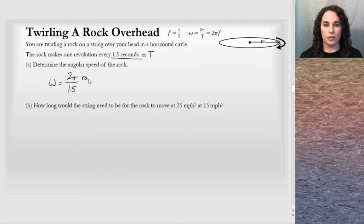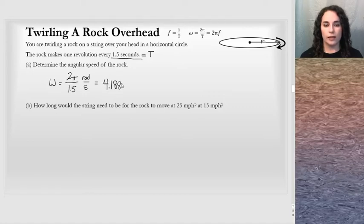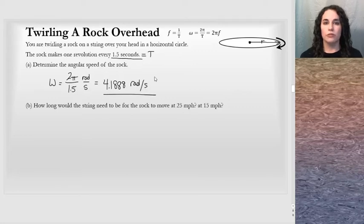Part A asks us to determine the angular speed of the rock. Omega is the number of radians per period. The quantity given — 1 revolution every 1.5 seconds — is the period. So we can write 2π over the period of 1.5 seconds. Running this through the calculator gives a nice answer of 4.1888 radians per second. Very straightforward.